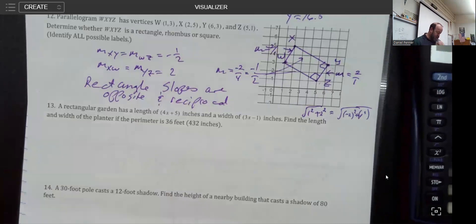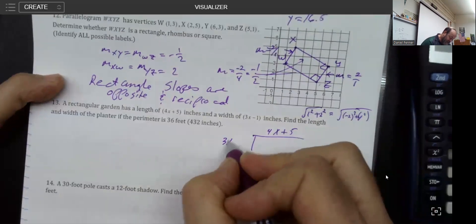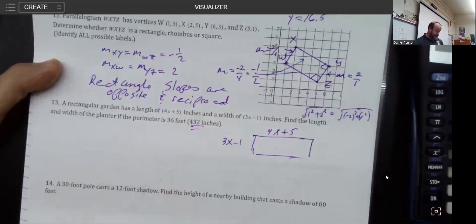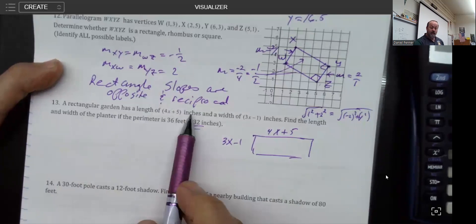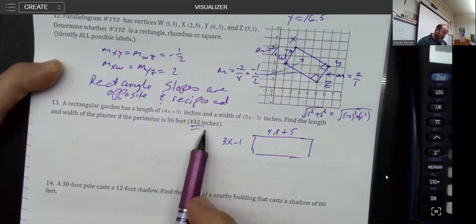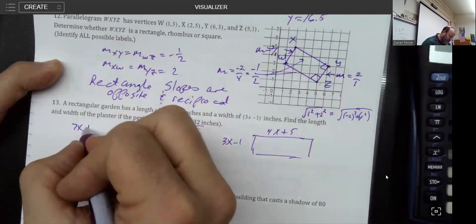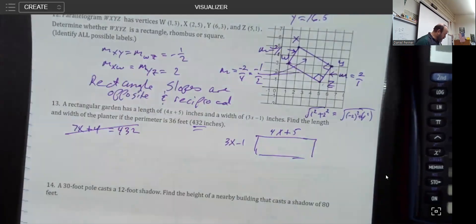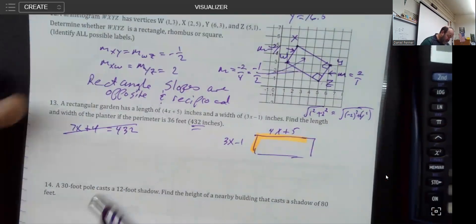That was the long question. Let's try to finish up the shorter one here. We got this rectangular garden that has a length of 4x + 5 and a width of 3x - 1 inches. Let's find the length and the width if the perimeter is 432 inches. We actually tried to help you because the original problem switched without saying it. If this says inches, then we need to talk about inches. If we were to add all this up, notice this is 7x + 4.